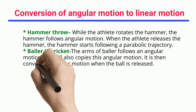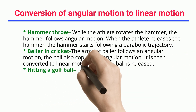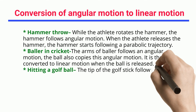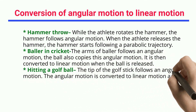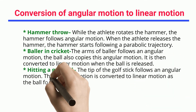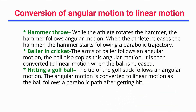Bowler in cricket: the arms of the bowler follow angular motion, and the ball copies this angular motion; it is then converted to linear motion when the ball is released. Hitting a golf ball: the tip of the golf stick follows angular motion, which is converted to linear motion as the ball follows a parabolic path after being hit.